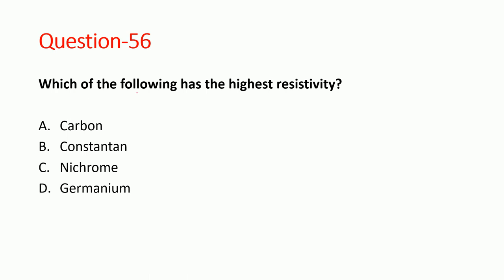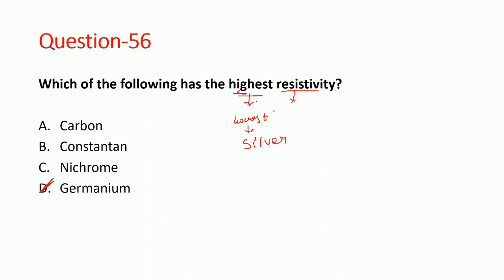Next question: which of the following has the highest resistivity? Resistivity is a measure of the resistant power of a specific material to the flow of electric current. The highest resistivity element is germanium — option D is correct. If asking about the lowest, the lowest resistivity is silver. So highest is germanium and lowest is silver.